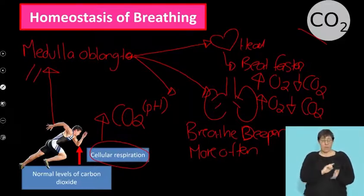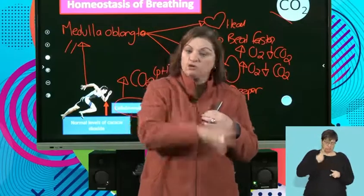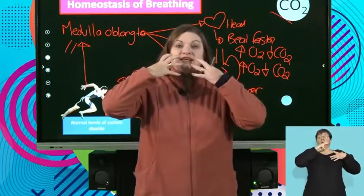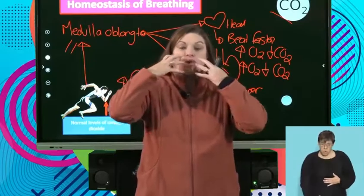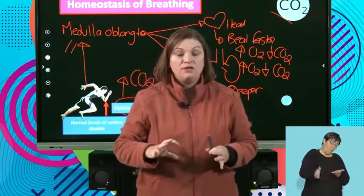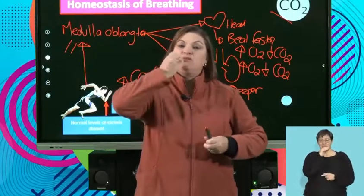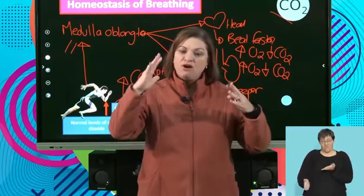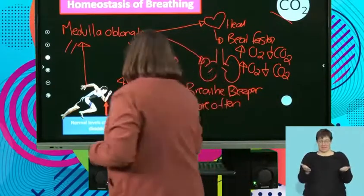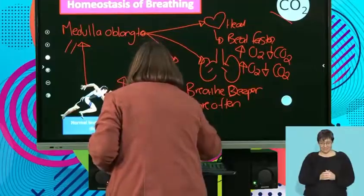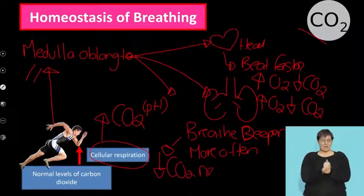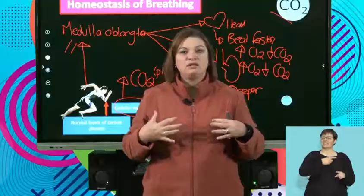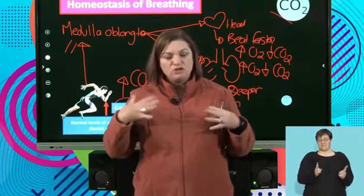So after exercising, my heart is beating fast — getting oxygen out there, getting carbon dioxide back to the lungs. I'm breathing in deeper, bringing in more oxygen. I'm breathing out more carbon dioxide, and breathing more frequently — getting more oxygen in but most importantly getting more carbon dioxide out. Then, after a while, when the levels equalize and my carbon dioxide gets back to normal, my breathing gets back to normal and my heart rate gets back to normal.